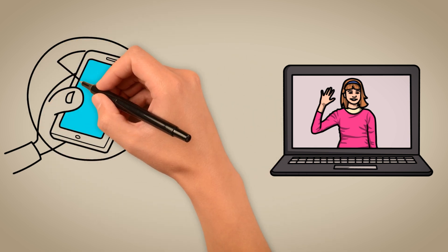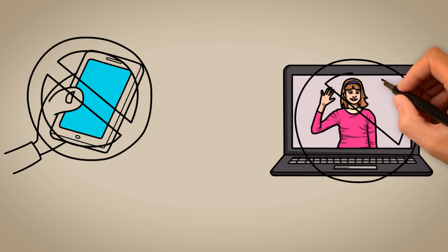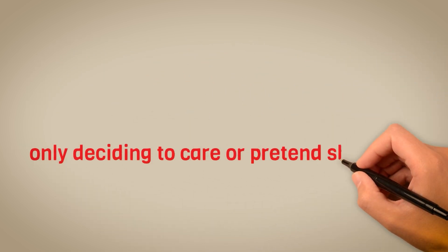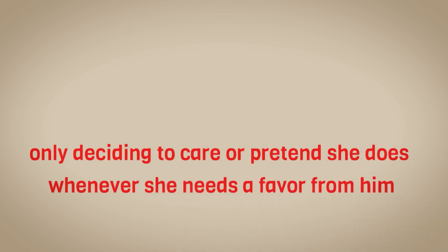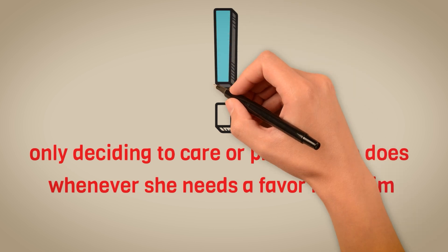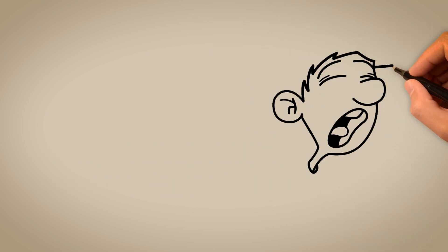She doesn't care to call or text him. She makes everything just about her and wants the sigma male to always be there for her, only deciding to care or pretend she does whenever she needs a favor from him. Whenever he is sick or in a deep mess, she will never show up or stand by him. But she will always expect a call from him to come to her aid when she needs a thing.